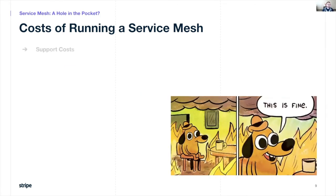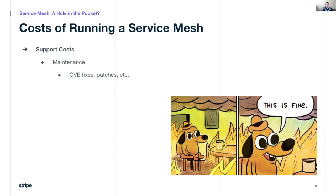Support costs. First up is maintenance — things like CVE patches are things you have to do to stay secure. You may also have bug fix patches. Service meshes typically represent a lot of different traffic patterns, and not all of those patterns get equal coverage from your upstream open-source software provider, so you may find yourself fixing things yourself sometimes.